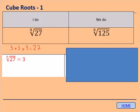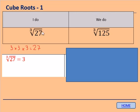Now let's start with cube roots. Remember what it means to cube a number — it means to multiply it by itself 3 times. So 3 cubed is 3 times 3 times 3, which equals 27. The cube root does the opposite: it asks what number do I need to cube to get 27? Well, what number cubed equals 27? The answer is 3, so the cube root of 27 is 3.